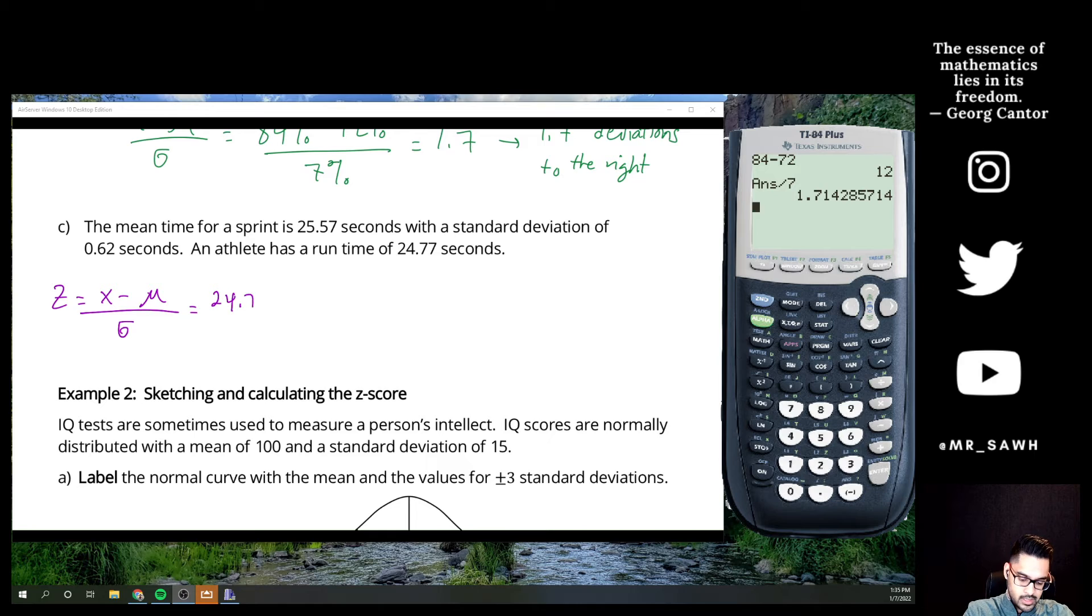So 24.77 minus 25.57, or 0.57, sorry. So since their time is smaller, I know that my z-score is going to be negative, which is a good thing here, because it means they are faster. They are better than average.